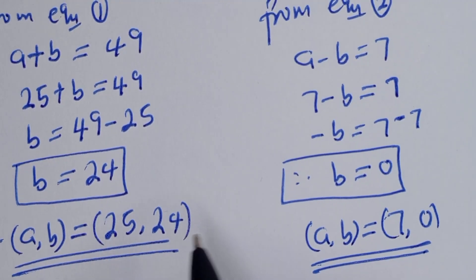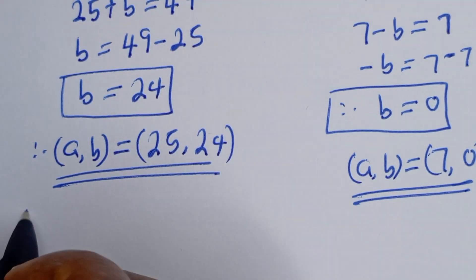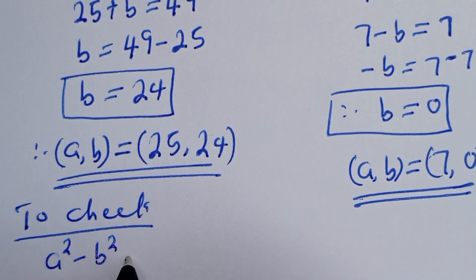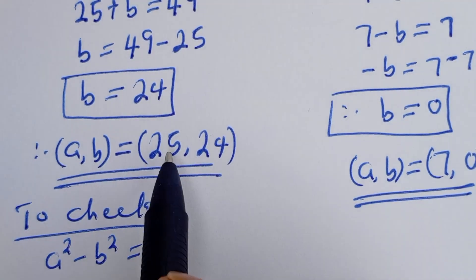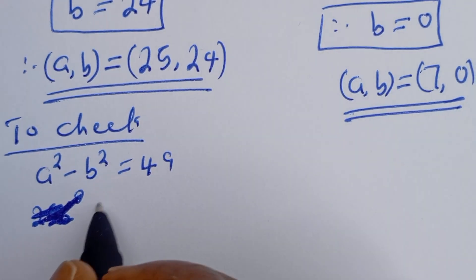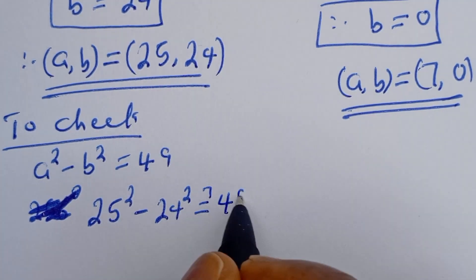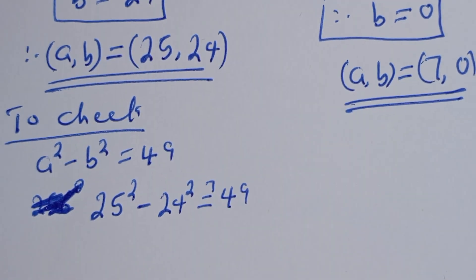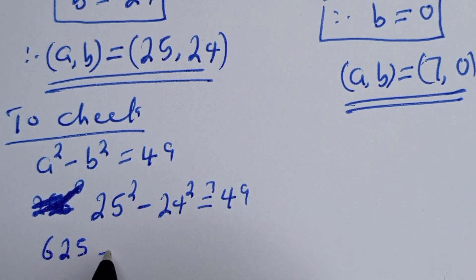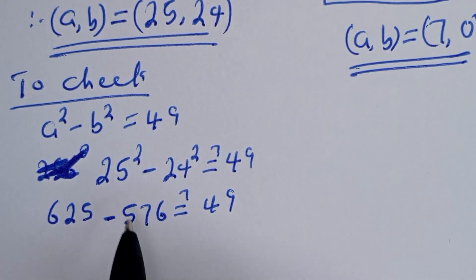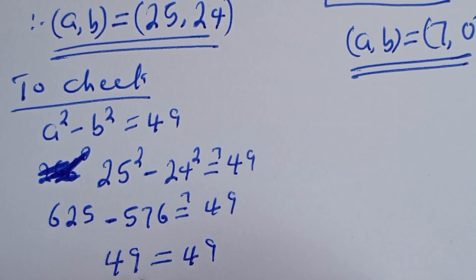Now we can check to confirm if the answers are correct. To check the first case: the given equation is A squared minus B squared equals 49. When A is equal to 25 and B is equal to 24, we have 25 squared minus 24 squared must equal 49. That is 625 minus 576 must equal 49. If you subtract 625 minus 576, we have 49 equals 49, which is true.